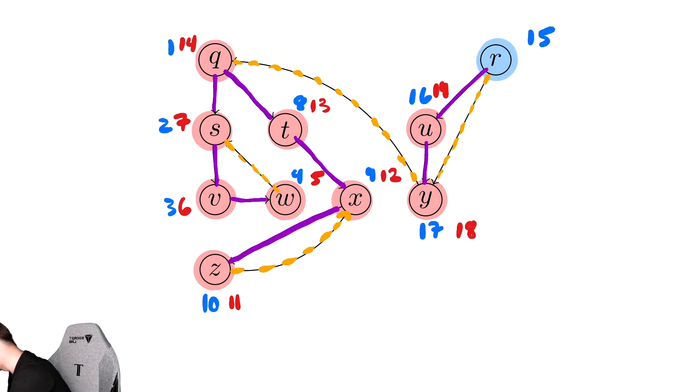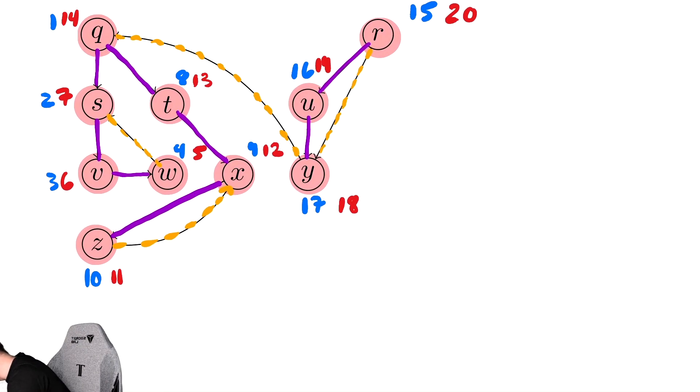And we then will finish r, so we color that in red, and we are now done. In case we want to identify them, the edges that we identified were that ws and zx were back edges. The edge from y to q was a cross edge, and the edge from r to y was a forward edge.